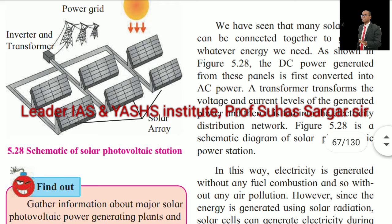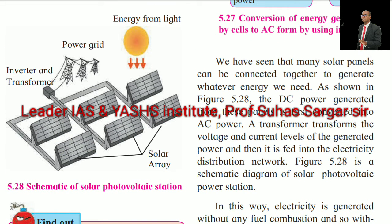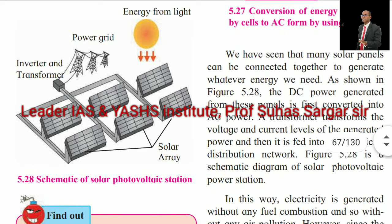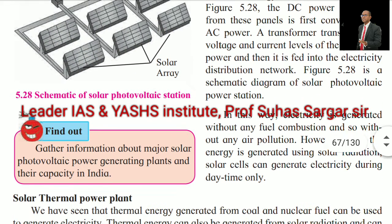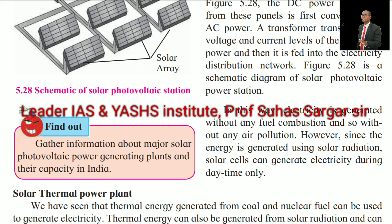See the schematic of the solar photovoltaic power station. Many solar panels can be connected together to generate whatever energy we need. The DC power generated from these panels is first converted into AC power. A transformer transforms the voltage and current levels of the generated power and then it is fed into the electricity distribution network. Electricity is generated without any fuel combustion and so without any air pollution. However, since energy is generated using solar radiation, solar cells can generate electricity during daytime only.